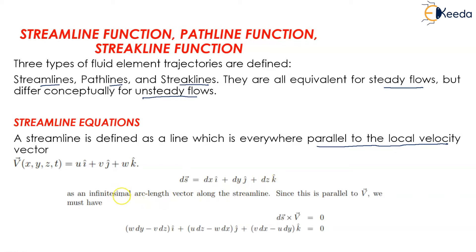As an infinite arc length vector along the streamline, since this is parallel to the velocity V, we must have ds bar multiplied by the velocity vector equals zero. We can write this as w dy minus v dz i cap plus u dz minus w dx j cap plus v dx minus u dy k cap equals zero.